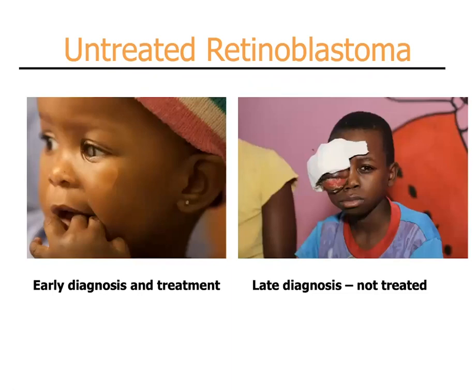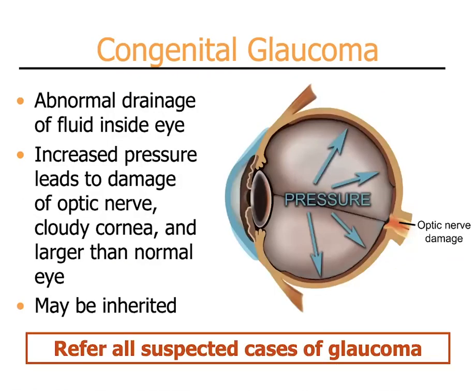The child on the right is an example of an advanced retinoblastoma where the tumor has eroded through the eye and is now likely to cause the death of this child.